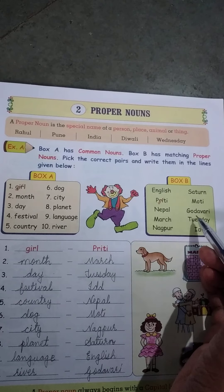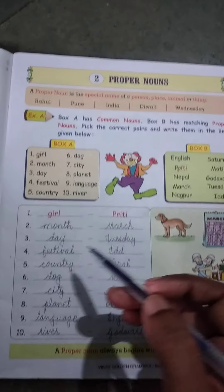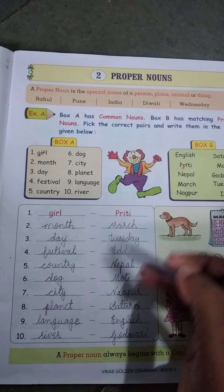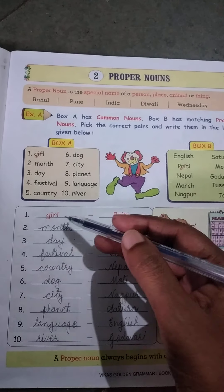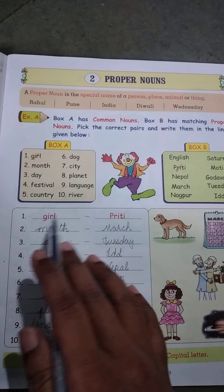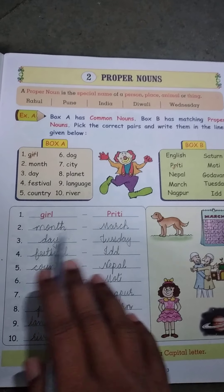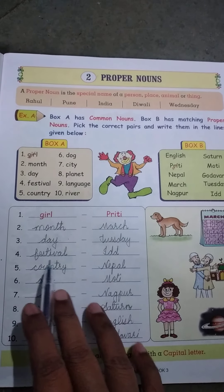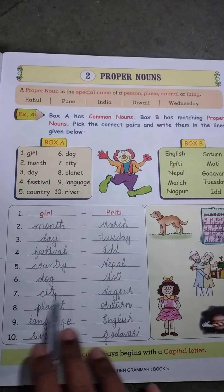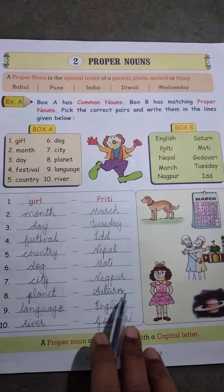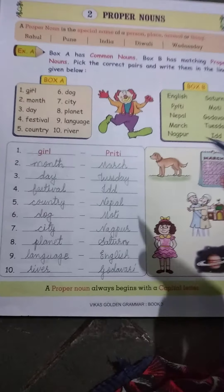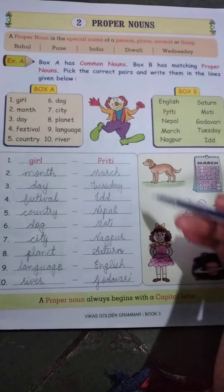Now below we have an activity or exercise. Box A has common nouns, and Box B has matching proper nouns. You have to pick the correct pairs and write them on the lines given below — matching the common noun from Box A with its proper noun from Box B.